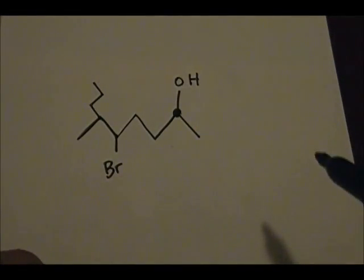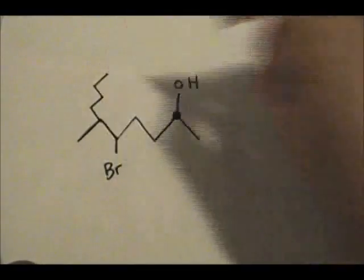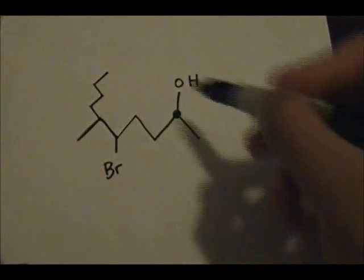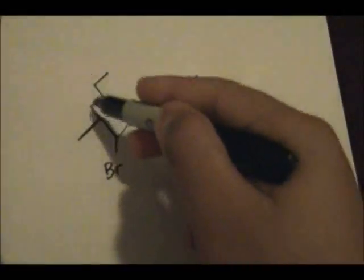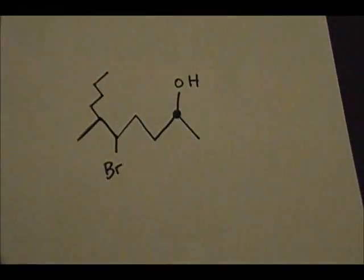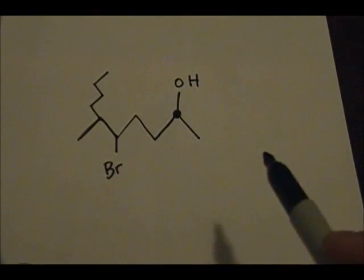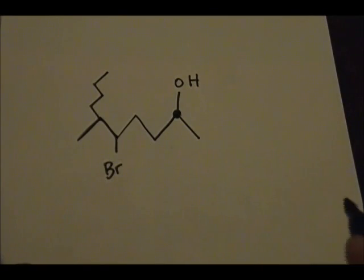Let's add an extra carbon here, so it would be ten. One, two, three, four, five, six, seven, eight, nine, ten — so it would be a ten-carbon chain. That's the longest possible chain, so first step is satisfied. We have determined the longest chain containing the carbon bonded to the alcohol.